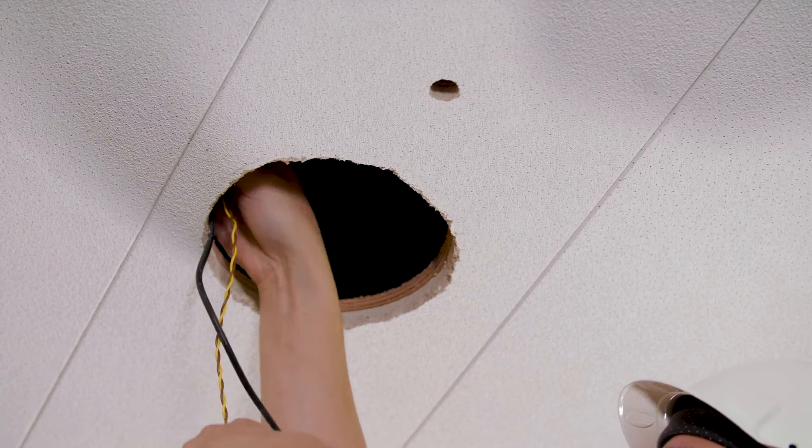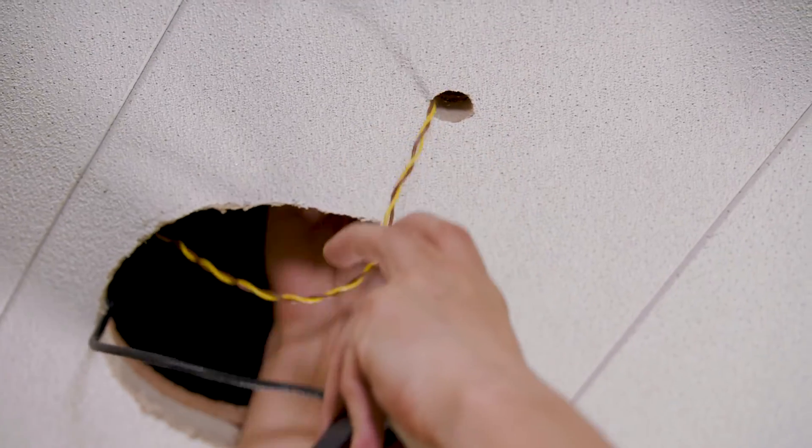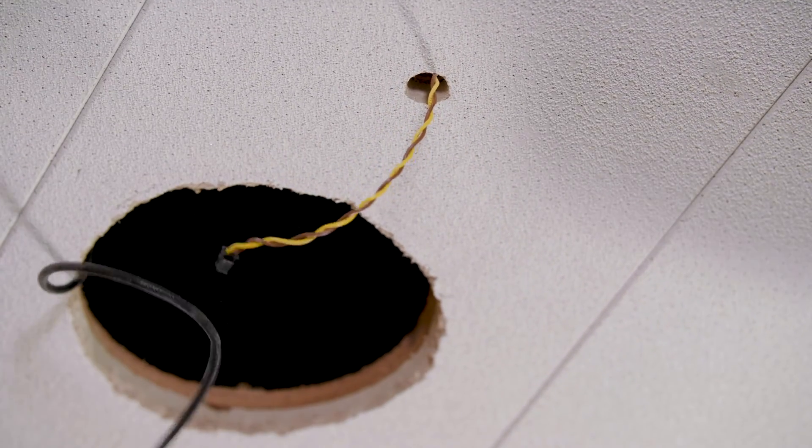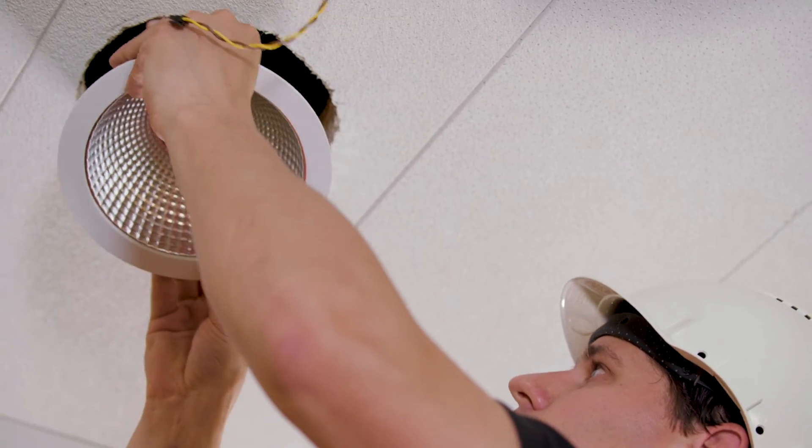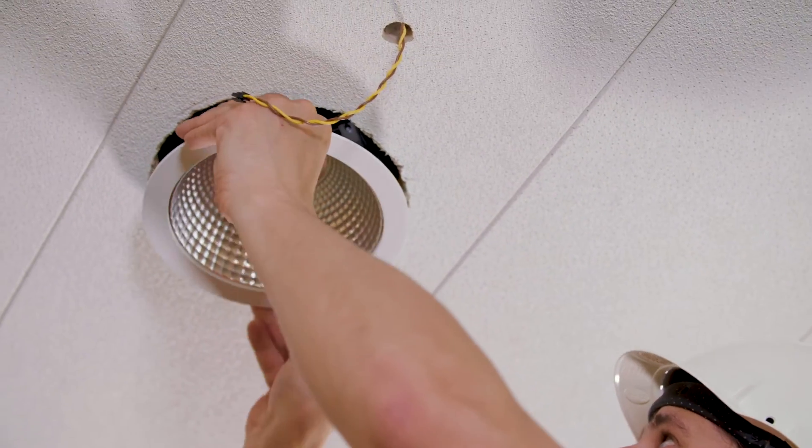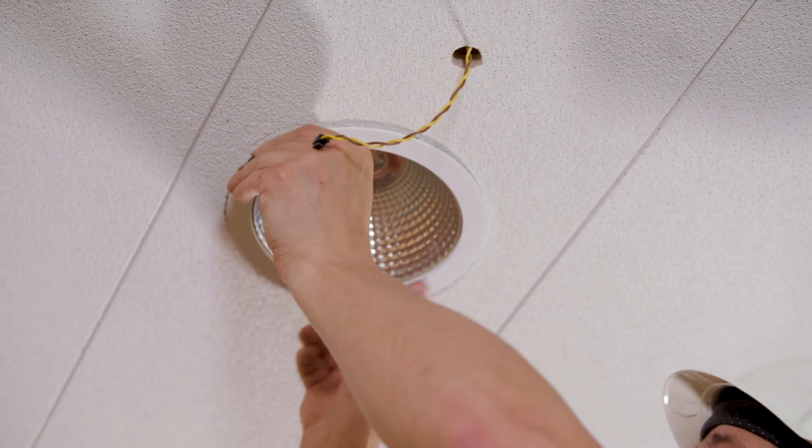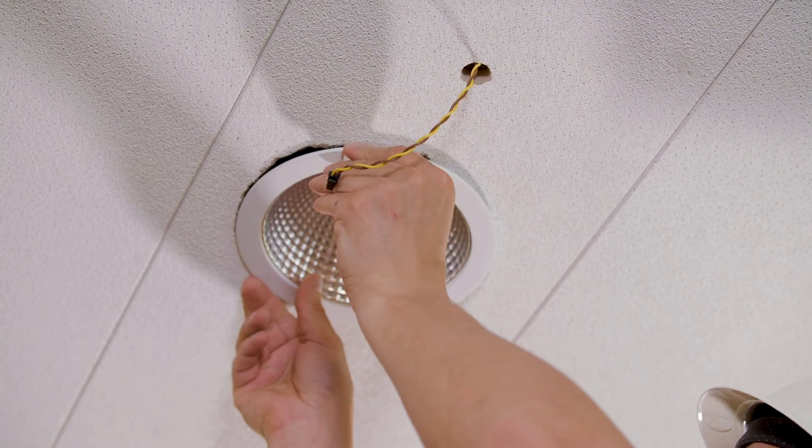Take the assembled LED downlight and guide the connected LEDCODE cable through the ceiling hole downwards. Connect the power cable to the power outlet. Place the LED driver on the ceiling and mount the downlight in the ceiling.